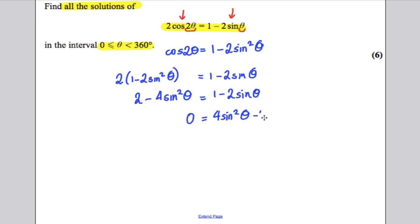So 0 would be equal to 4 sine squared theta, subtract 2 sine theta, and we'd have 1 subtract 2, which would be negative 1. Now let's try, could we factorize this?